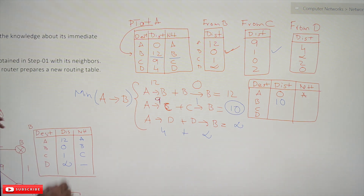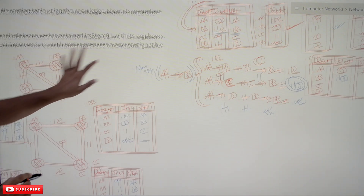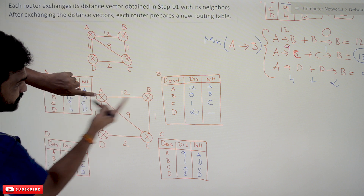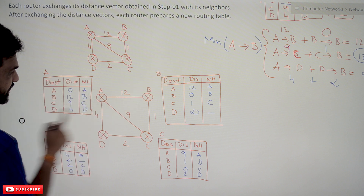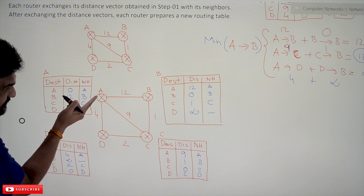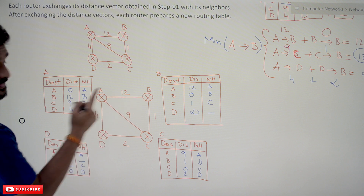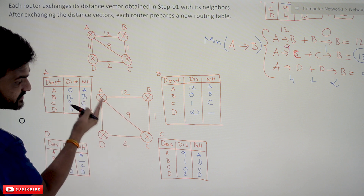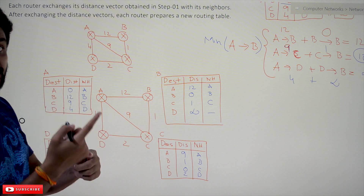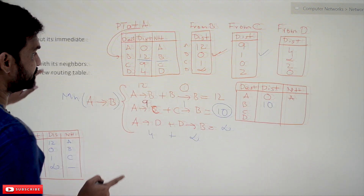Let's verify with the diagram: A to B directly is 12, but if you transmit the data from A to C and then C to B, it is 10. So the next hop is C in the updated table.